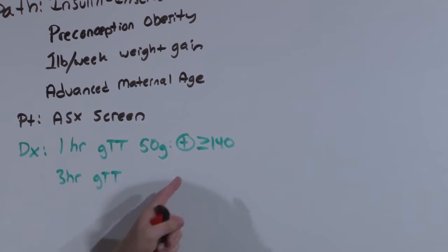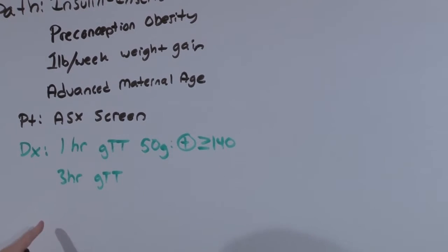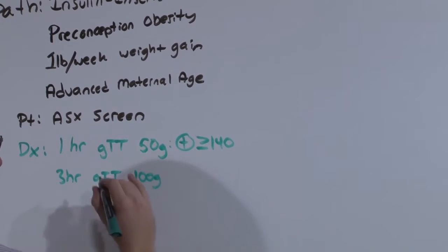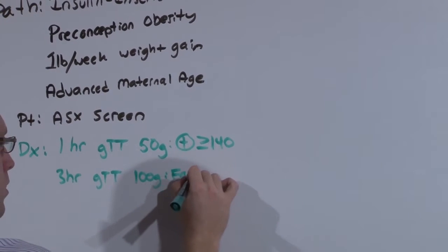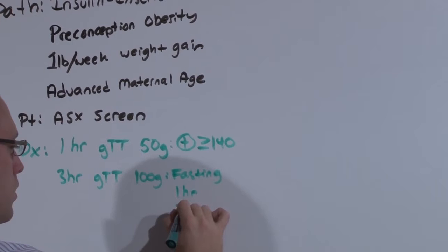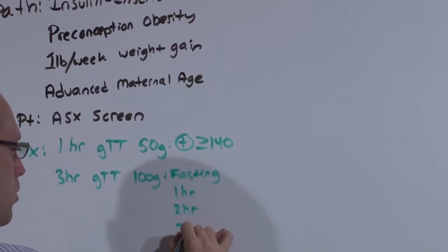What you need then to do instead is confirm gestational diabetes with a three hour glucose tolerance test where you give someone a 100 gram oral glucose load who has been fasting. And you check fasting glucose levels and then glucose levels at one hour, two hours, and three hours.